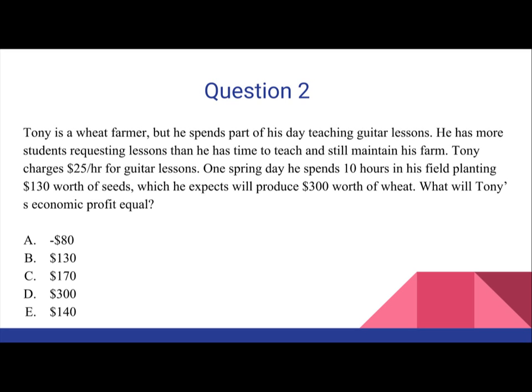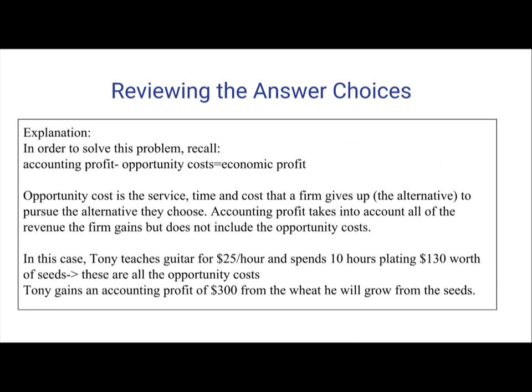Now I'm going to show you the process right over here. In order to solve this problem, remember that accounting profit minus opportunity cost equals economic profit. Opportunity cost is the service, time, and cost that a firm gives up — the alternative — to pursue the alternative that they choose.